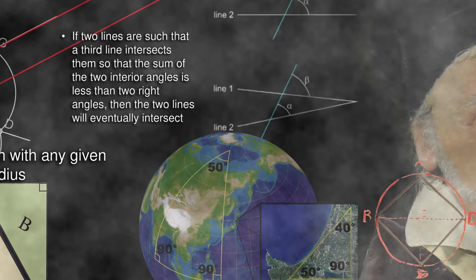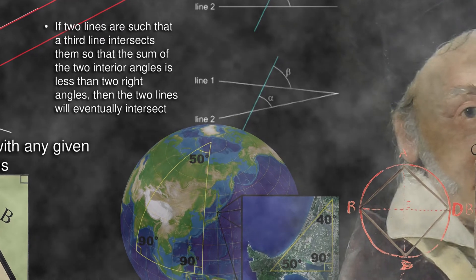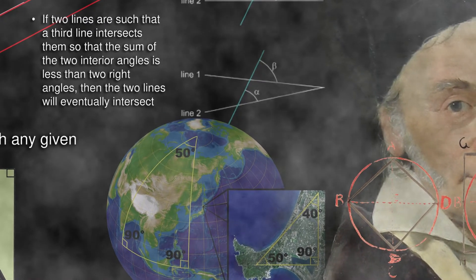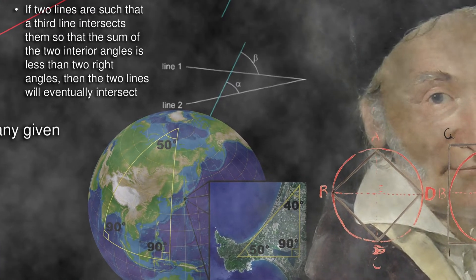It wasn't until the 19th century that mathematicians such as Carl Gauss began to realize the limitations of Euclidean geometry and develop new geometric concepts to cover curved space.